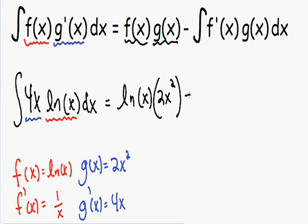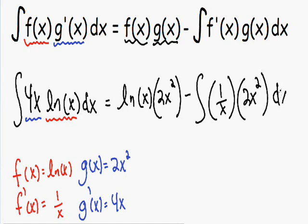And this is all being subtracted by the integral of f prime of x. We know that f prime of x is equal to 1 over x. So we have 1 over x being multiplied by g of x, and we know our g of x is equal to 2x squared. So we have 2x squared for g of x, and then we can't forget to put our dx.